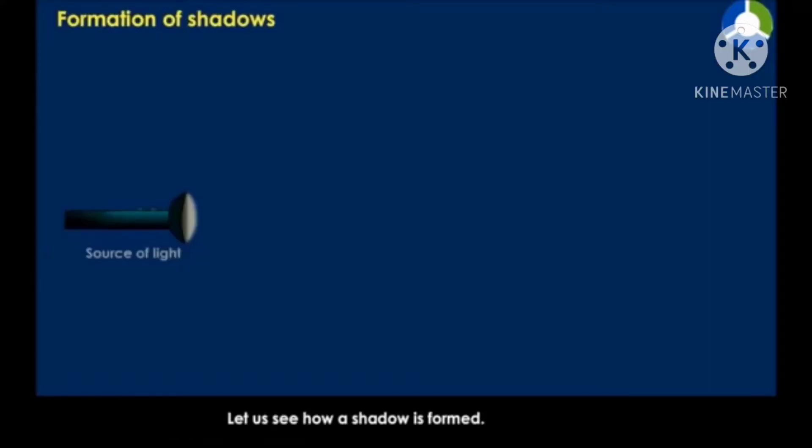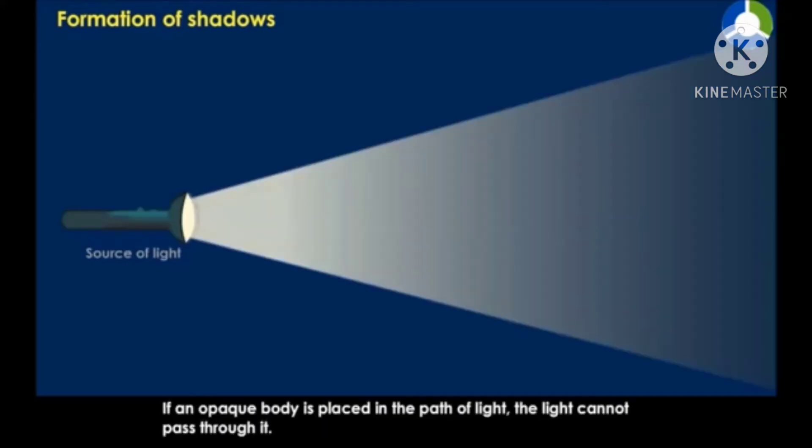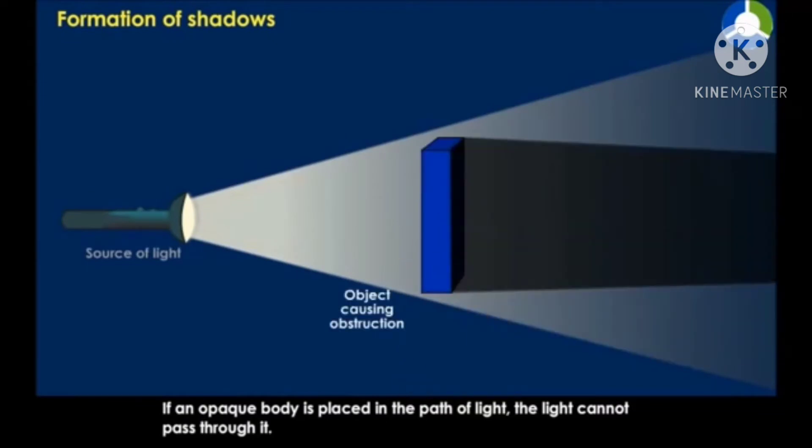Let us see how a shadow is formed. If an opaque body is placed in the path of light, the light cannot pass through it.